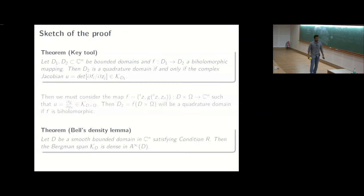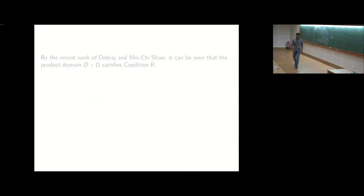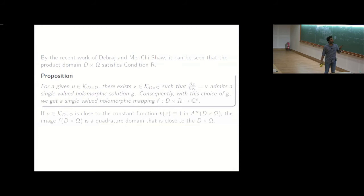And by a recent work of Debraj and Mechi Shaw, we know that and subsequent work with Kaushal, it's known that if we take two condition r domains and look at its product, they will also be a condition r domain. And therefore we have d cross omega will satisfy condition r. And we pick a function u which is close to identity, not identity, the constant function 1 and try to solve for this particular PDE there in d cross omega.